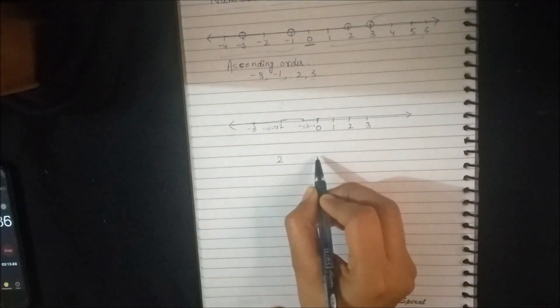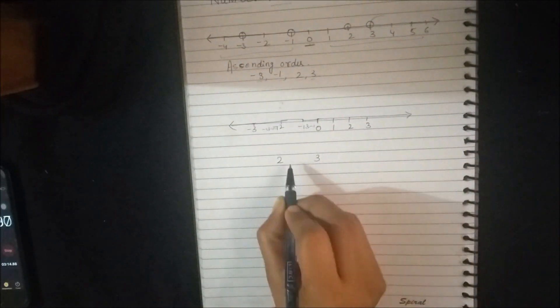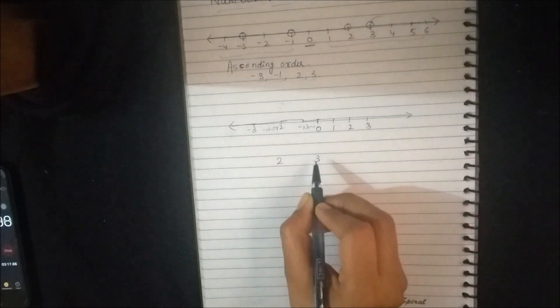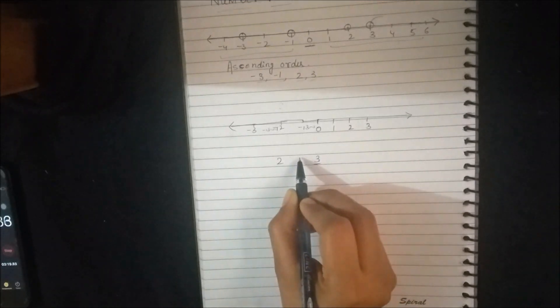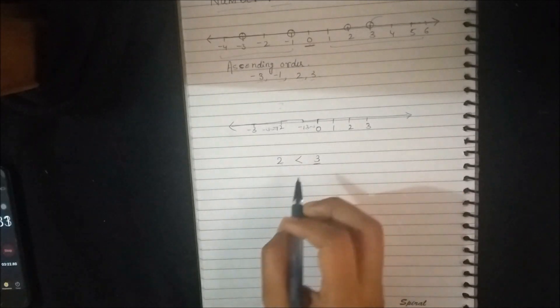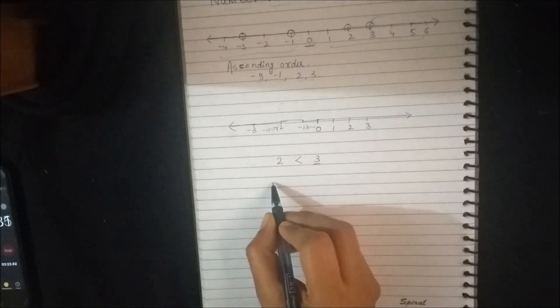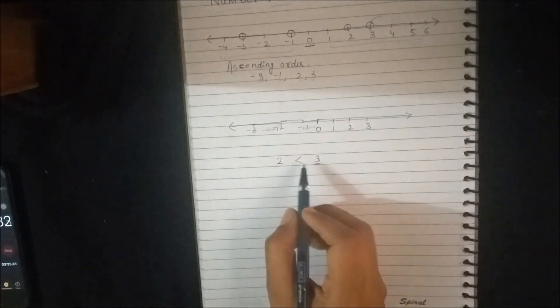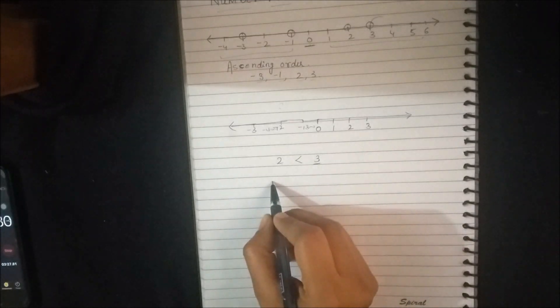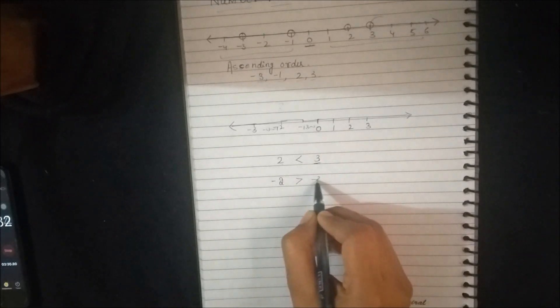If I write 2 and 3 and you have to recognize which one is greater, we know that plus 3 is greater than minus 2. But in the case of negative numbers, this sign reverses — like minus 2 is greater than minus 3. So we know the difference.